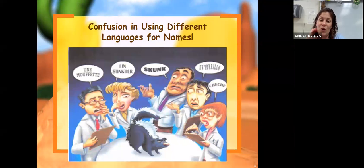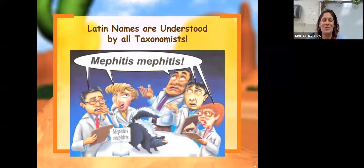That allows for no confusion when it comes to talking about a particular species. In this little hilarious comic, you can see that they're trying to identify this critter. One person called it a skunk and the others have different words and they have no idea if they're on the same page. Then aha, Mephitis mephitis, and now they're all on the same page and they know they're talking about the striped skunk.